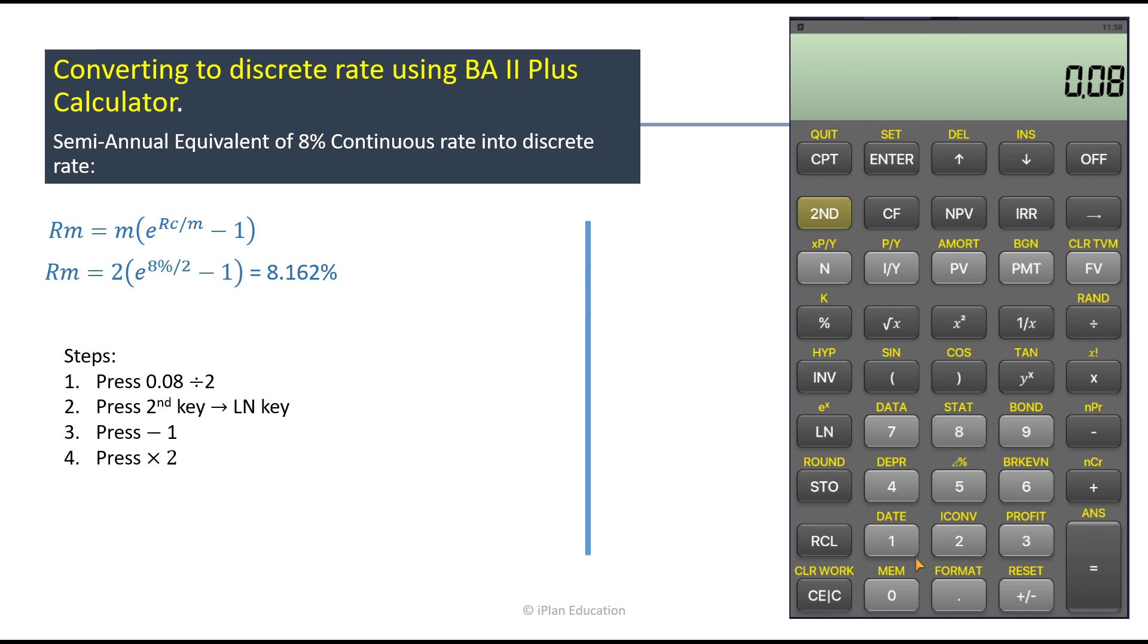Sorry, it has not taken. So I'm going to divide this thing with 2, and then what we do is press the second key, so you can see second button here, and then the log natural key, LN key. So it takes the upper value here, the e to the power x value.